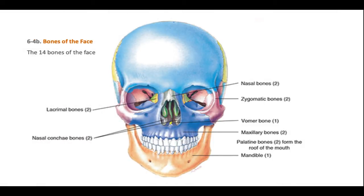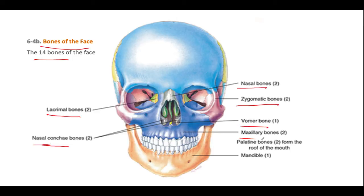This is the review. We have 14 bones of the face: the nasal conchae bones, lacrimal bones, nasal bones, zygomatic bones, vomer bone, maxillary bone, mandible bone, and inside the mouth the two palatine bones that form the roof of the mouth.